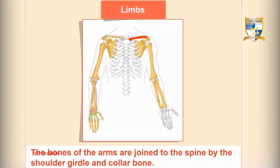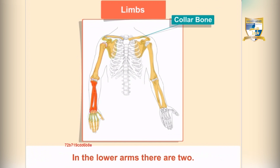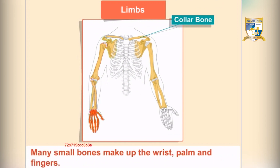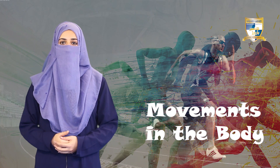The bones of the arms are joined to the spine by the shoulder girdle and collar bone. In the upper arm there is only one bone, while in the lower arm there are two. Many small bones make up the wrist, palm, and fingers.